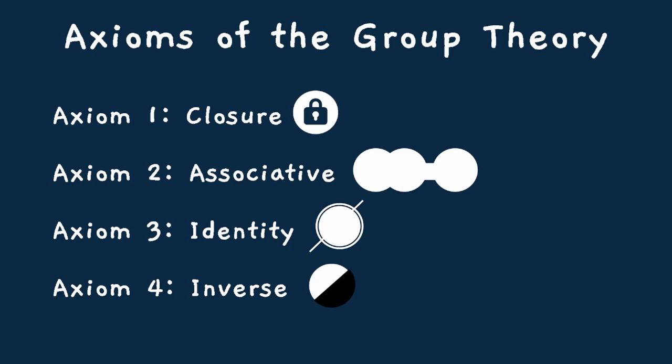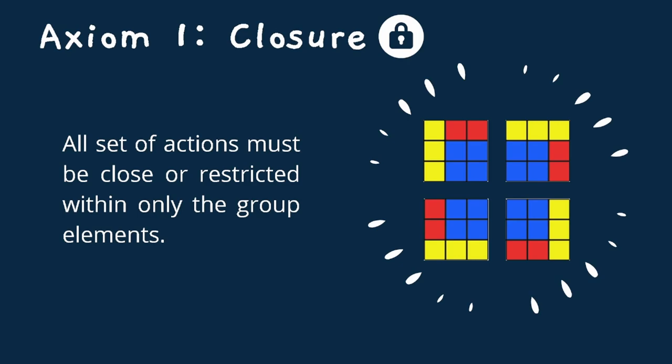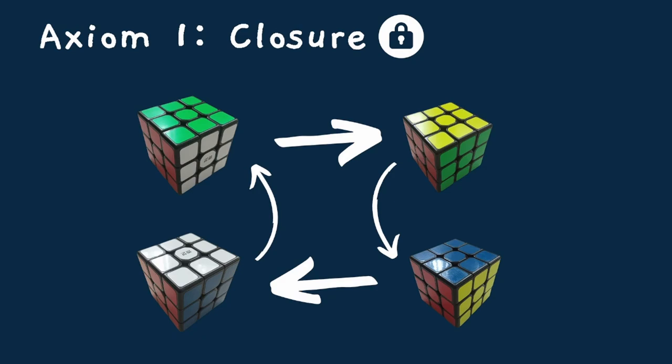The axioms of group theory are: Axiom 1 - closure, Axiom 2 - associative, Axiom 3 - identity, and Axiom 4 - inverse. Axiom 1, closure, states that all sets of operations or actions must be closed or restricted within only the group elements. So whatever set of actions, whether you rotate one side of the cube, it is still an element of the group. If we were to rotate the cube by 90 degrees, you would see that there would be a new element within the group, which opens up many possibilities.